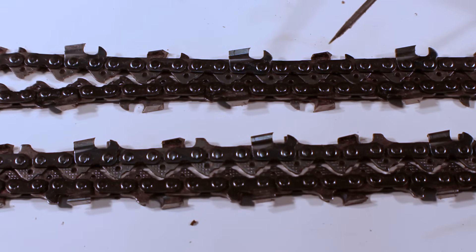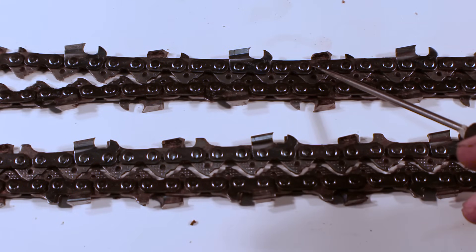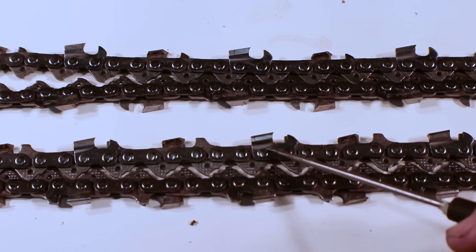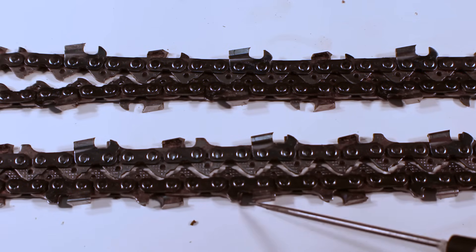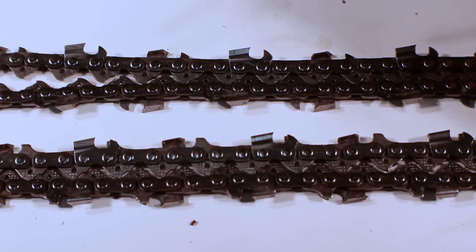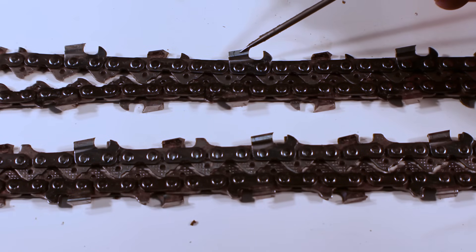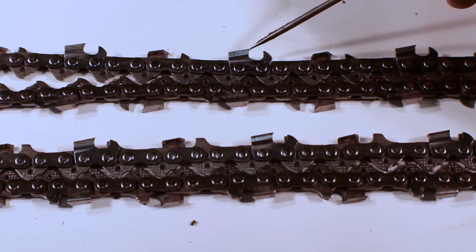Here we have two chains for my 661. They're both the same gauge, pitch and drivelink count. The differences are that the top chain is a full chisel chain and the bottom is a semi chisel chain. What they're talking about is the geometry of the top plate. On a full chisel chain, it's a 90 degree corner on the top of the top plate. This chain cuts a bit faster than semi chisel but also dulls a bit faster as well.